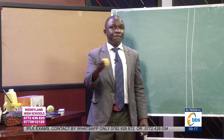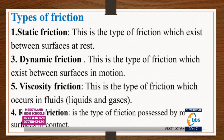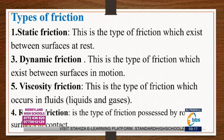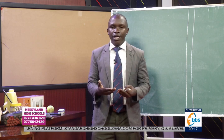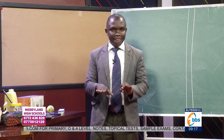Third is viscosity friction — the type of friction which occurs in fluids, basically liquids and gases. When a fish is in water, it experiences viscosity friction. When a bird is flying through air, it also experiences viscosity friction.